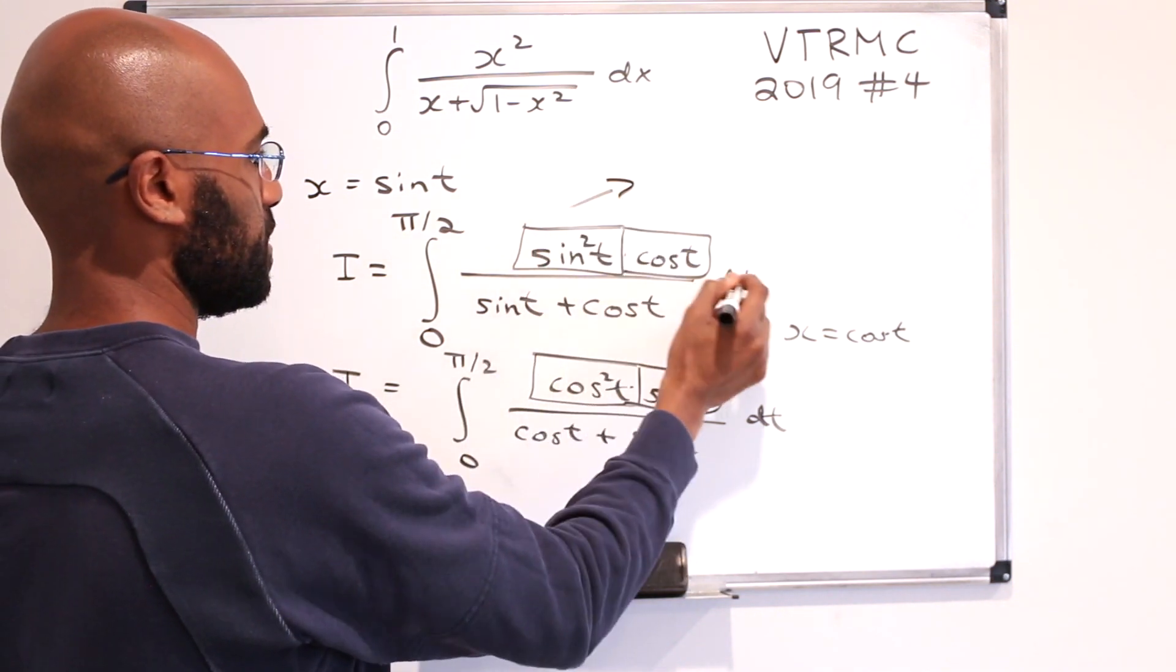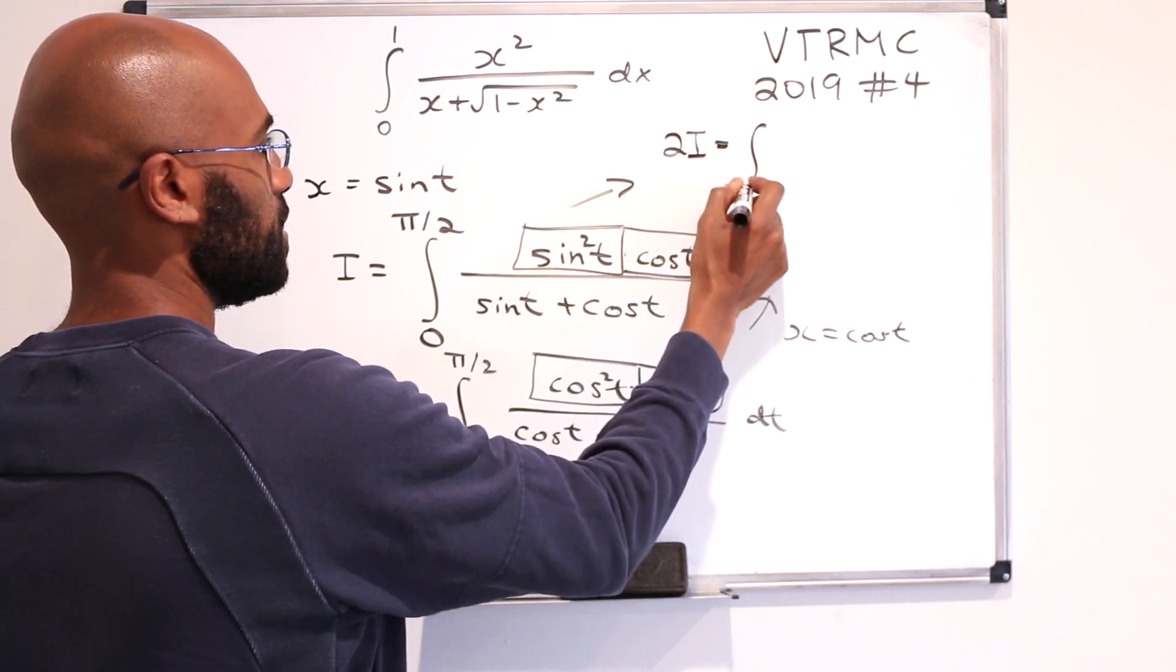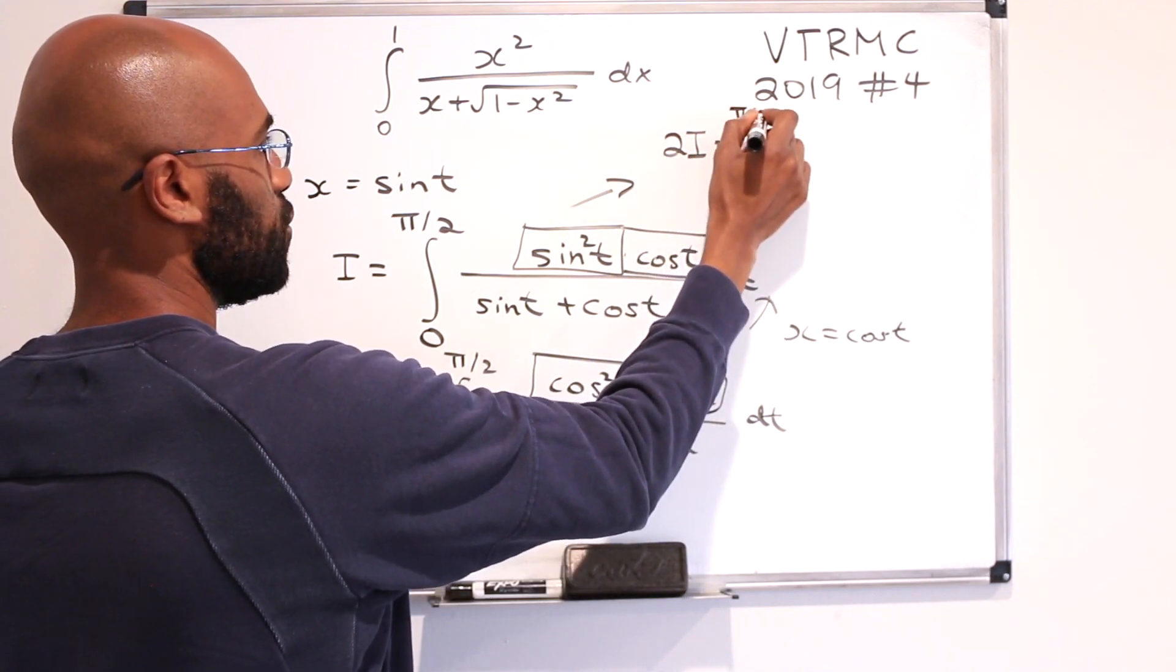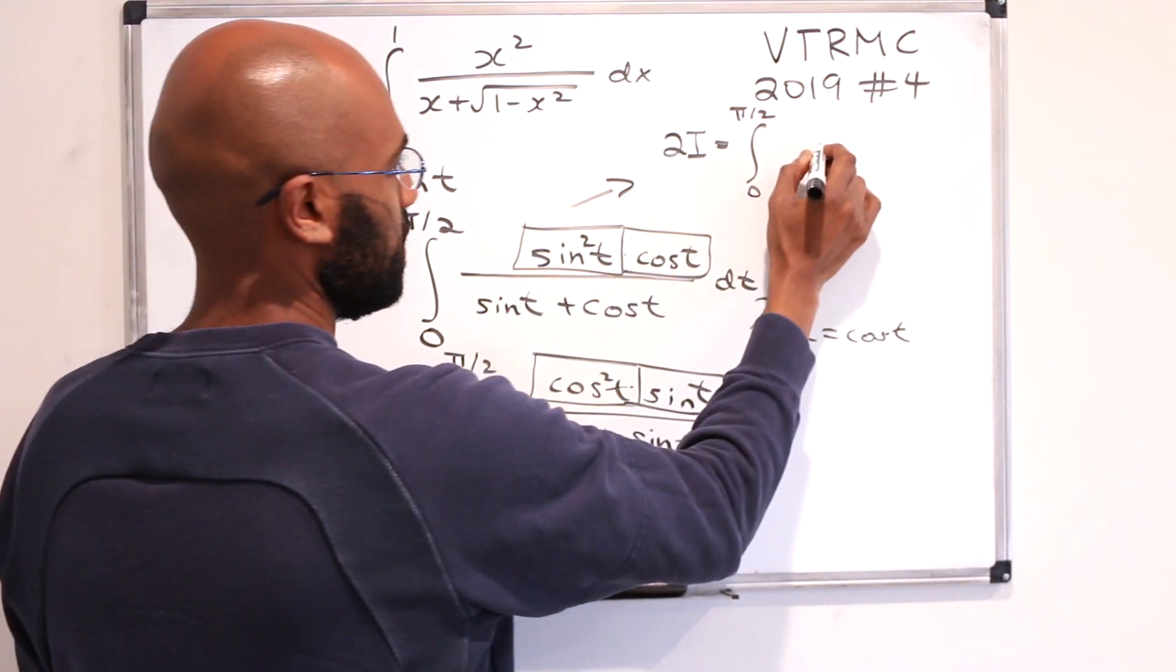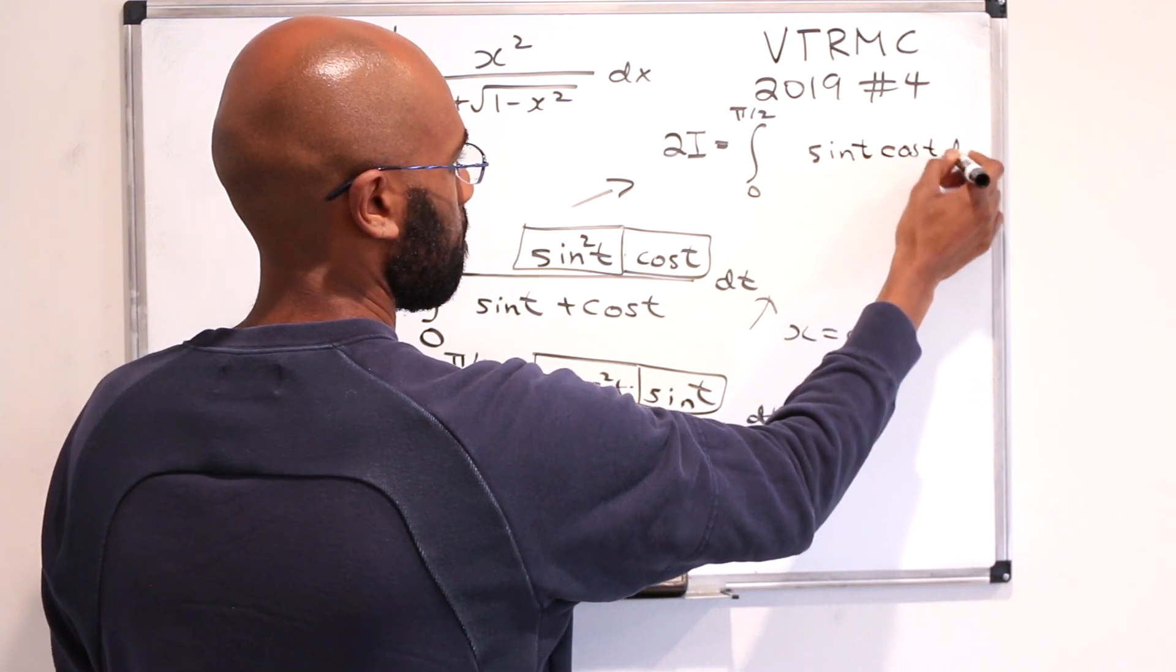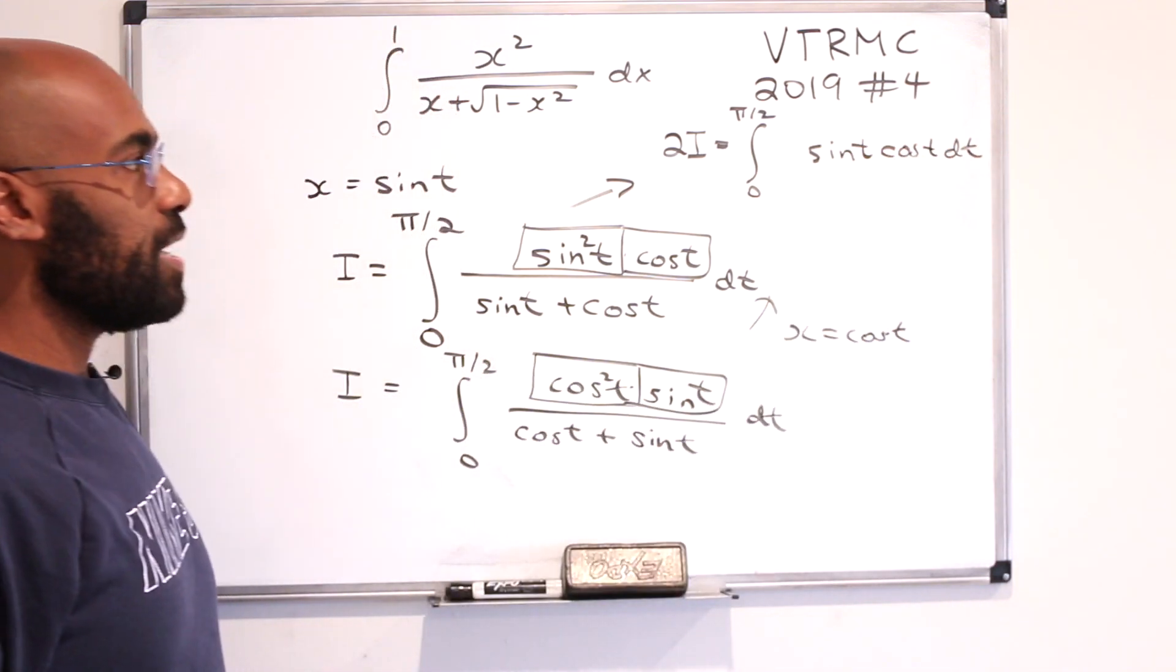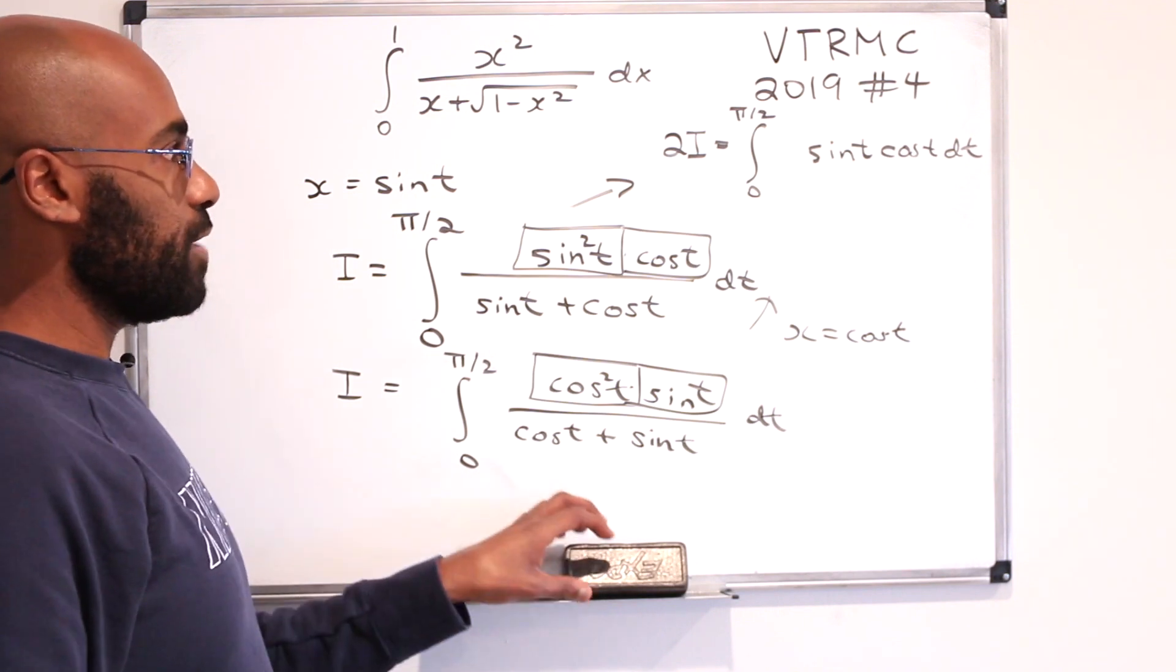So in other words, if we added these two things together, we get that twice the integral is the integral from zero to pi over two of the only thing that remains, which is sine t cosine t dt. And now we have an integral that we can try to solve using more standard techniques.